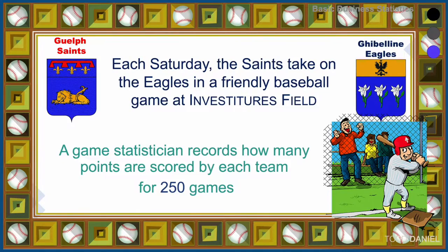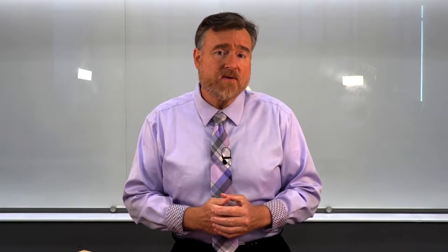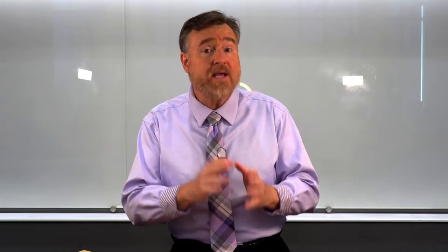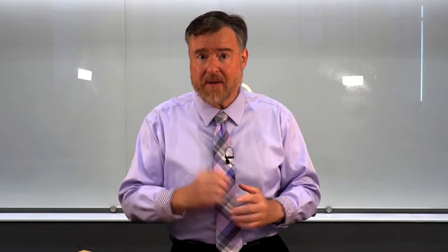Following along with our business of the week, we know that Dante likes to relax on the weekends. He likes to play baseball. Each Saturday, the Guelph Saints take on the Ghibelline Eagles in a friendly game of baseball at Investiture's Field. A game statistician records how many points are scored by each team for 250 games. Obviously, this data set goes back a lot of Saturdays. What we're going to do is examine the outcomes of points scored for each team independently.